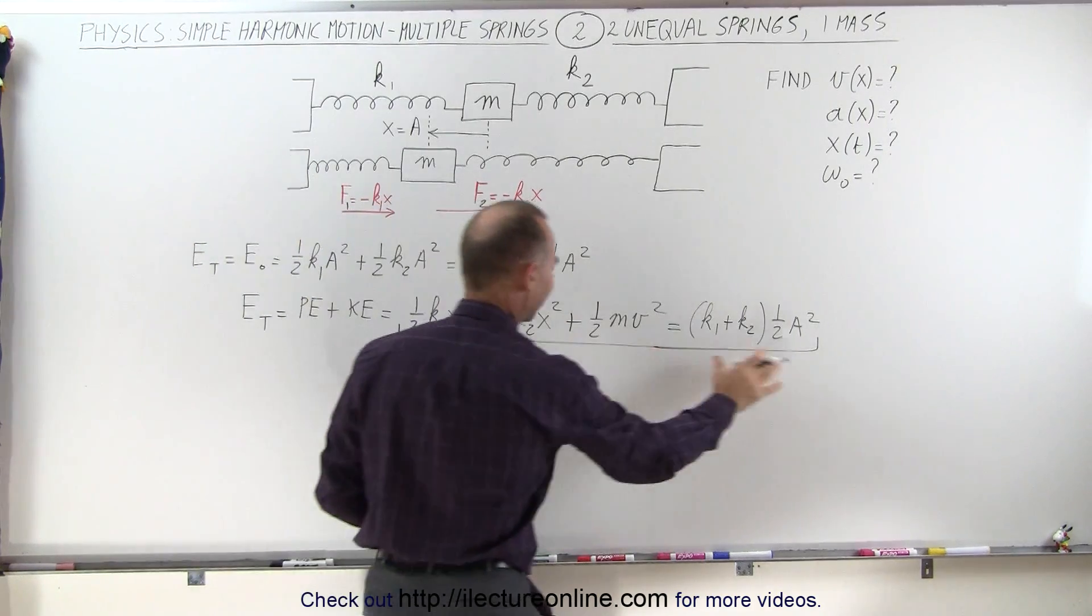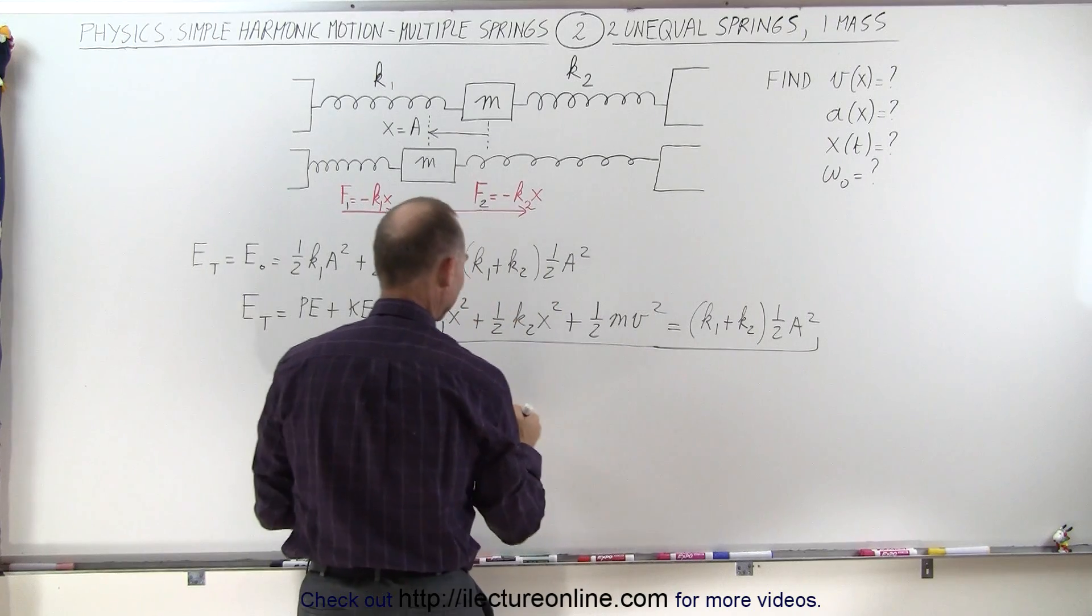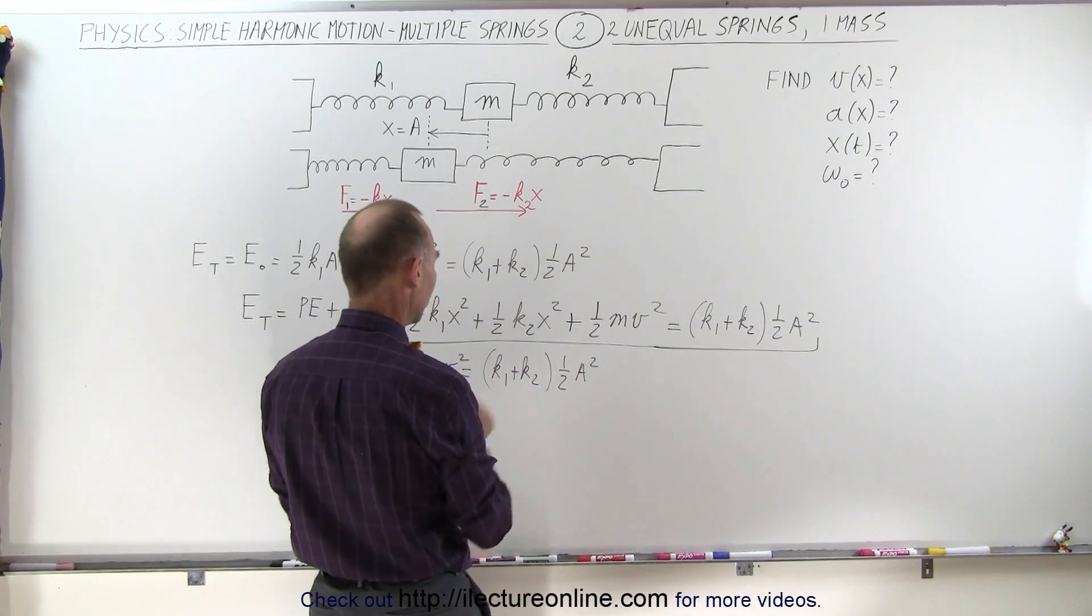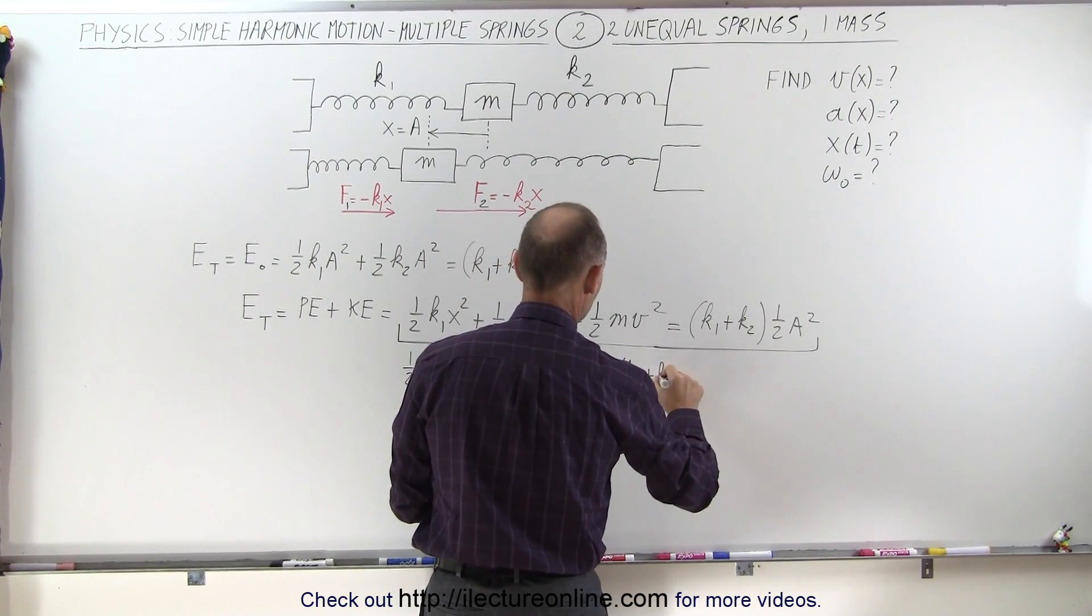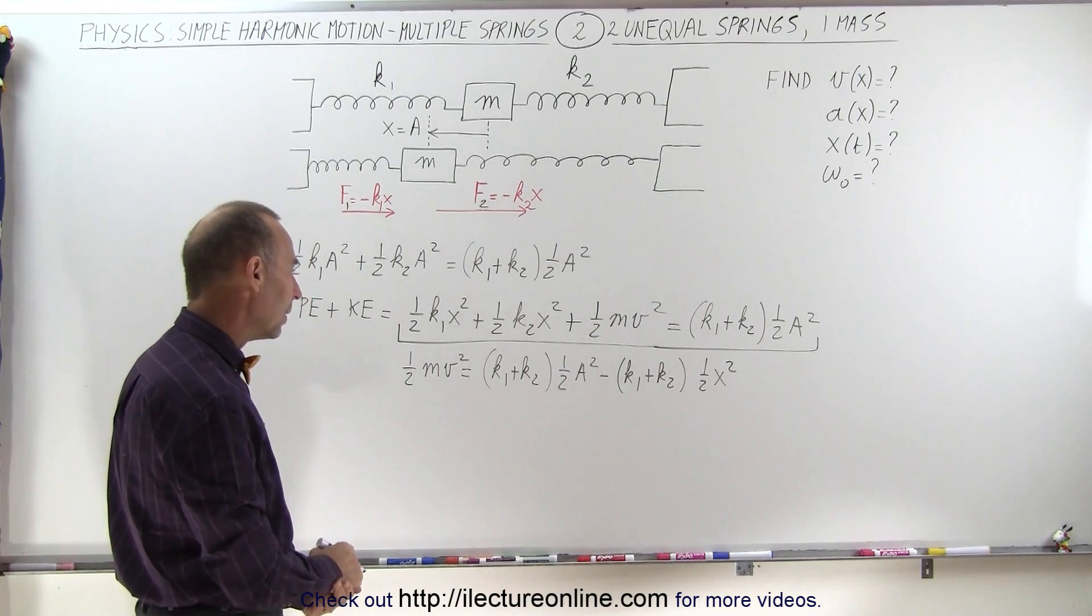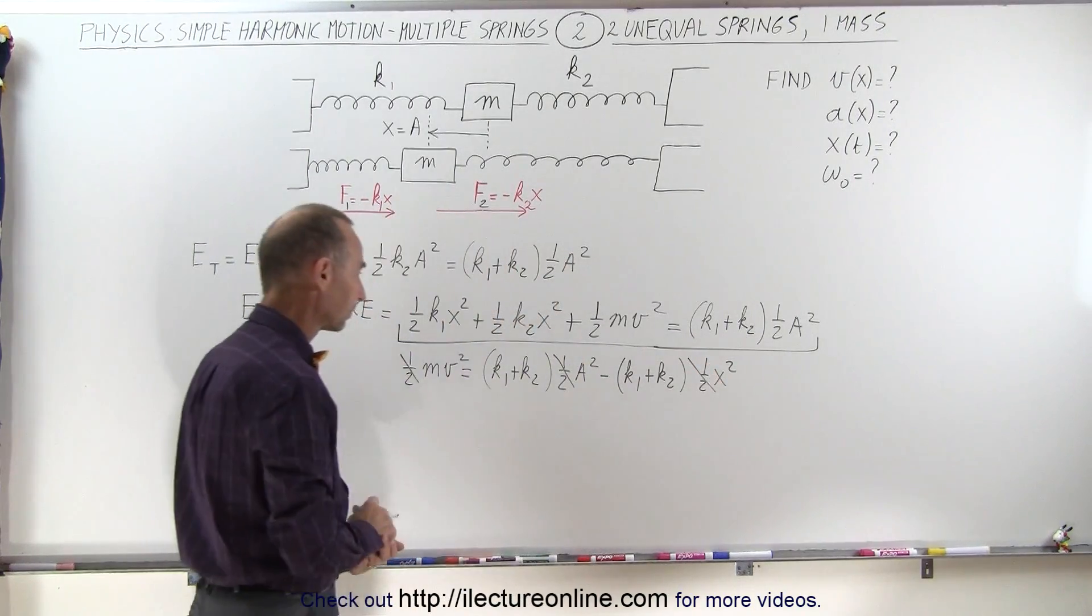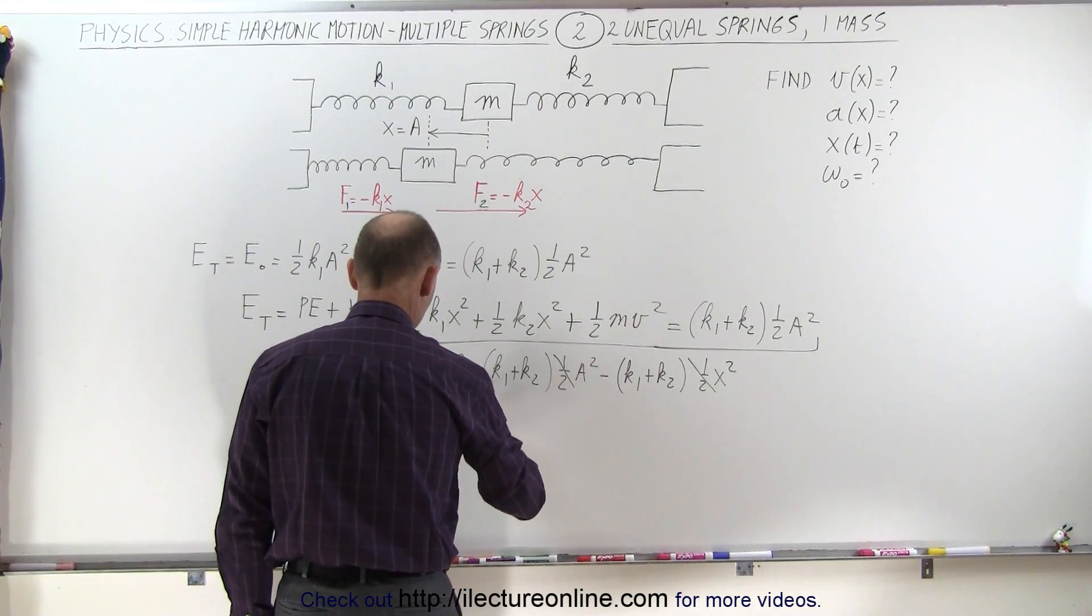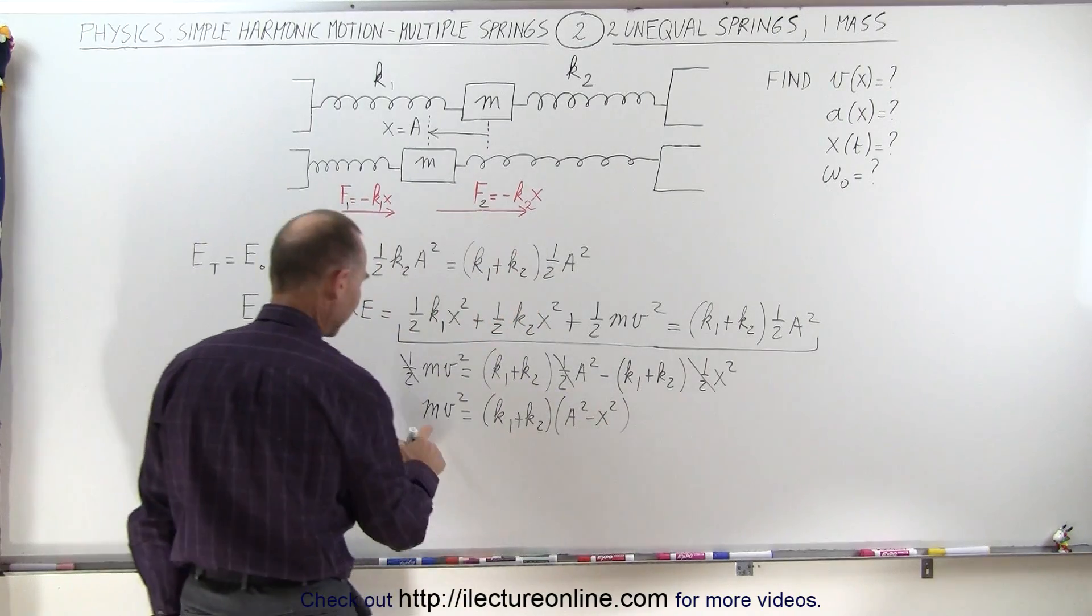So the first thing we want to do is move everything else over to one side. So what that means is we can write one-half mv squared is equal to, when I move these over to the other side, that becomes negative. So we have k1 plus k2 times one-half a squared. And when I move this over, that becomes negative, but can also factor out a one-half x squared. So this would be minus k1 plus k2 times one-half x squared. All right, and now when I look at that, I can first of all multiply everything by two. When I do that, I get rid of all the one-halves, so those are gone. And next, I can factor out a k1 plus k2. And this can be written as mv squared is equal to k1 plus k2 times a squared minus x squared. And then finally divide both sides by m.